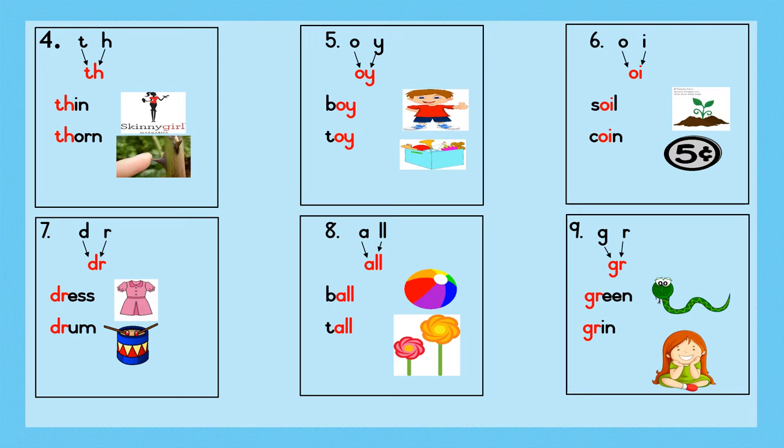Example 4. T-h-th. T-n: thin. Sentence: The girl is thin. T-h-th. Thorn. Sentence: The thorn poked my finger.